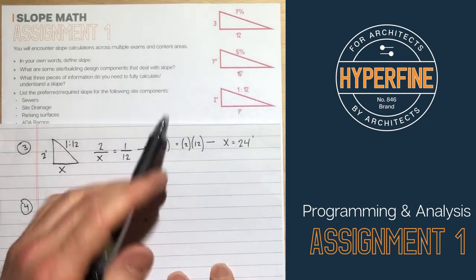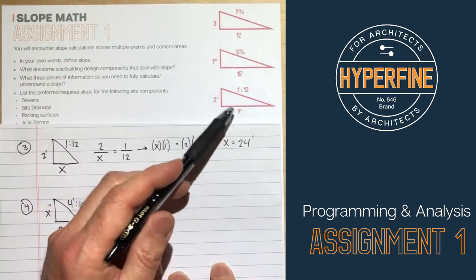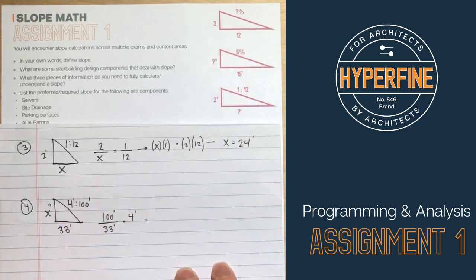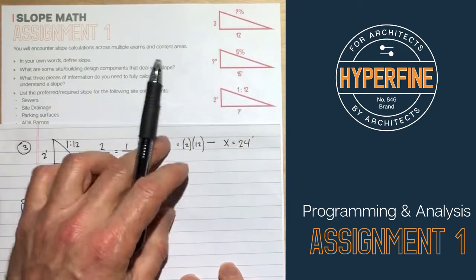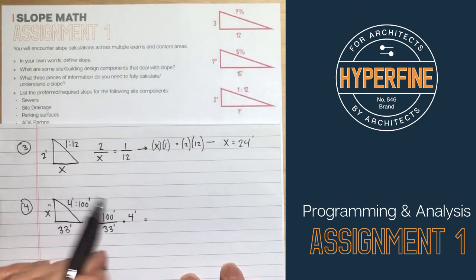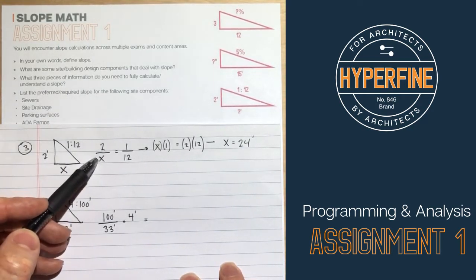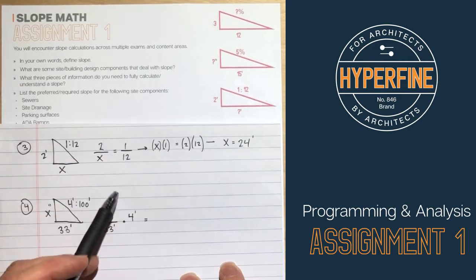Okay, the third one, you're given a rise of 2 feet. You have to figure out what is the run, and you're given 1 to 12 slope. And so that's just a ratio. So that doesn't have any units. It doesn't matter. So we set this one up just the same. So 2 over X, right, our rise over run is equal to 1 over 12.